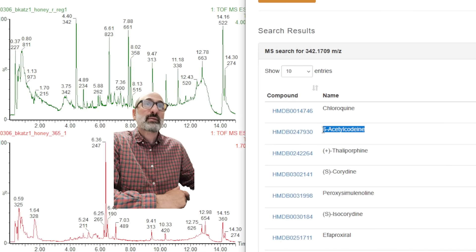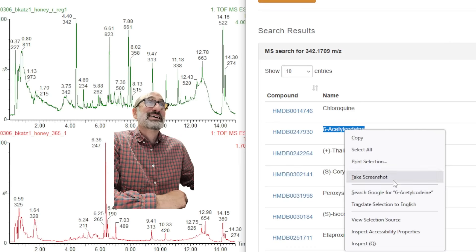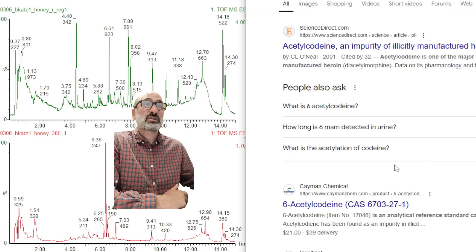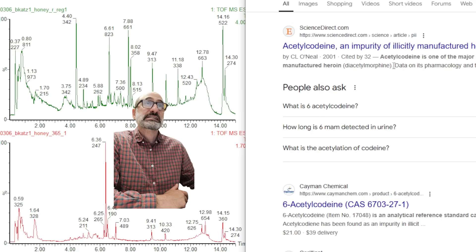If we look at the fragmentation ions on this acetyl-codeine, they actually do match the peaks that we were seeing. Some of them match. Acetyl-codeine, kind of scary. Definitely not supposed to be in there. It is a major impurity in illicitly produced H.